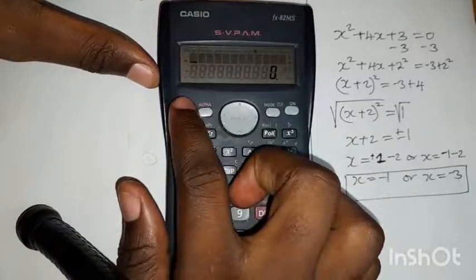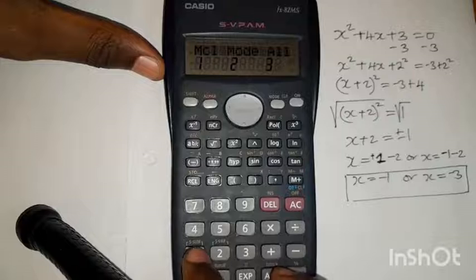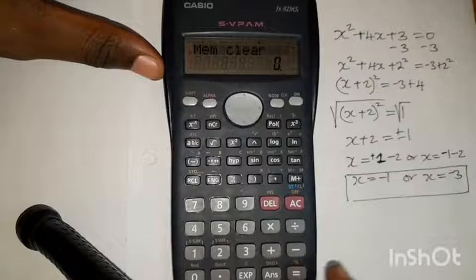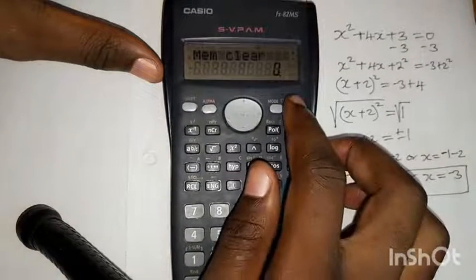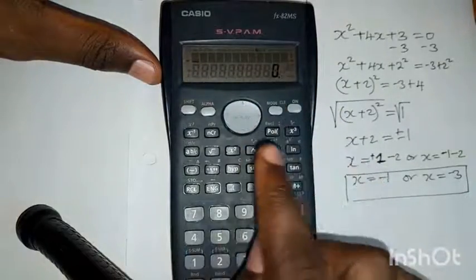Again, let's press shift, mod, then 1, and equal sign twice. So everything that was in the memory of this calculator has been cleared.